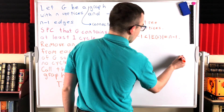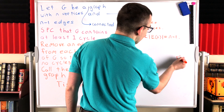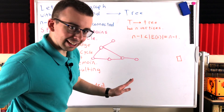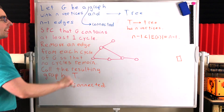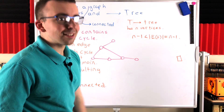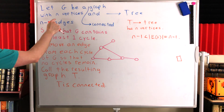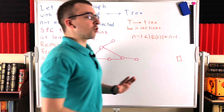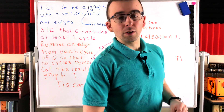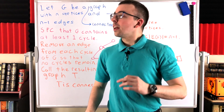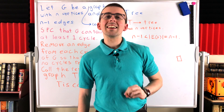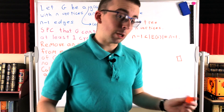That's a contradiction, which completes the proof. G cannot possibly have any cycles. Thus it is a connected acyclic graph. Thus G is a tree. Thus, if a connected graph has one less edge than it has vertices, it is a tree. And in conclusion, the new characterization of trees that we get: a connected graph is a tree if and only if it has one less edge than it has vertices.